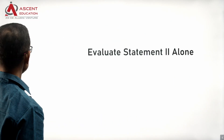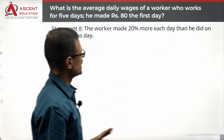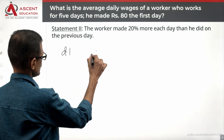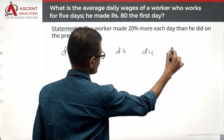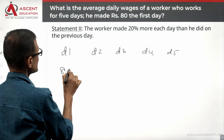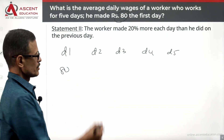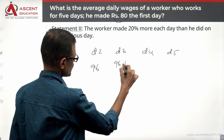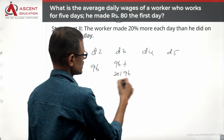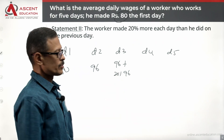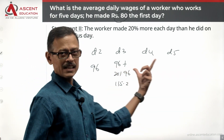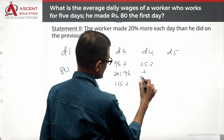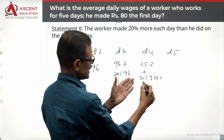Let us see whether Statement 2 alone will help us. Statement 2: the worker made 20% more each day than he did on the previous day. So D1 is 80, D2 is 96, D3 is 96 plus 20% of 96, which is 19.2, making it 115.2. D4 is 115.2 plus 20% of 115.2.